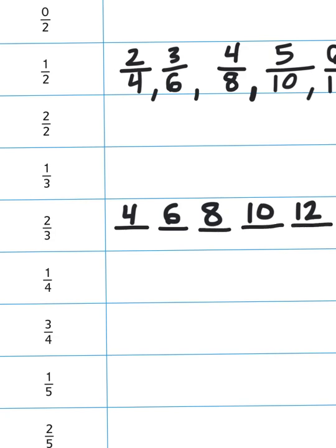Then the bottom number, or the denominator, I would increase by 3. So if I skip count by 3's: 3 plus 3 gives me 6, 6 plus 3 would give me 9, 9 plus 3 would give me 12. I am just following a pattern of skip counting or ticking off multiples of 3. So 12 eighteenths is equivalent to 2 thirds because 12 is a multiple of 2 and 18 is a multiple of 3.